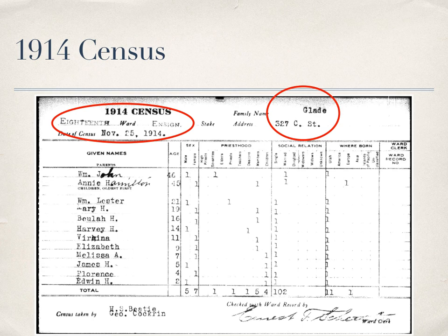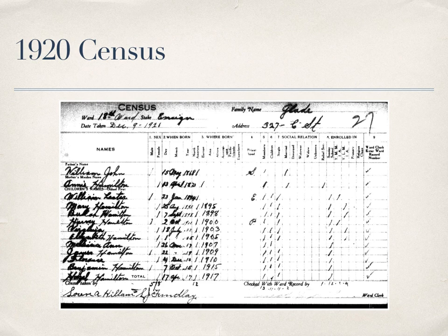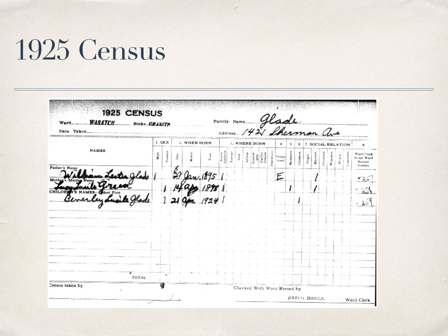Here's the 1914 census, the first one. It shows the family name and address, the ward and the stake, and the family members with their ages. Looking at the Green family, I get the same information. In the 1920 census, the same family appears, but this time the day, month, and birth year have been added. In the 1925 census, my grandfather, who was listed on the previous one as living at home, has now moved out, is married, and they have my mother — so that was pretty fun to see.